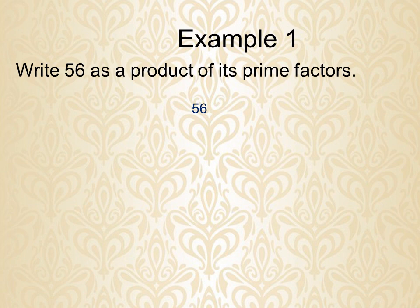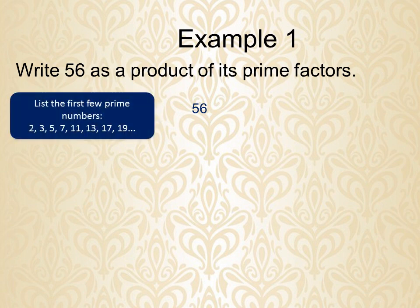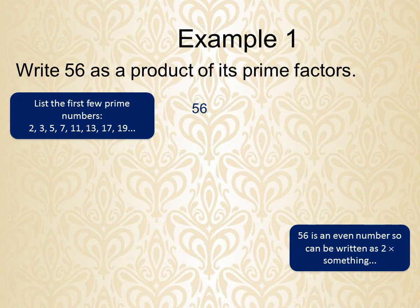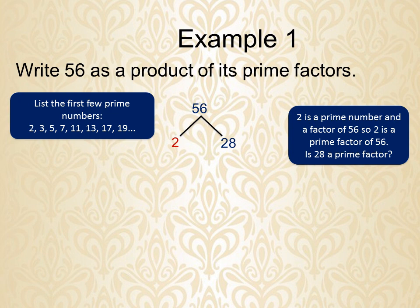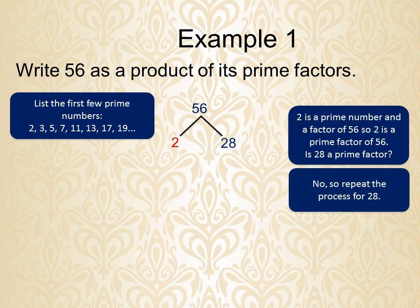Remember, prime numbers are 2, 3, 5, 7, 11, 13, 17, 19 — a prime number is only divisible by itself and one. Since 56 is an even number, we can write 2 × 28 = 56. Here, 2 is a prime number and a factor of 56, so 2 is a prime factor. But 28 is not a prime factor, so we repeat the process.